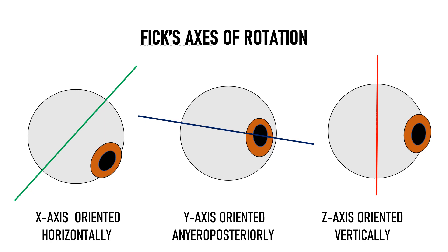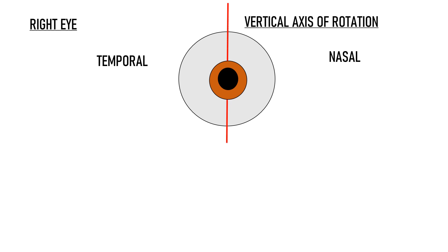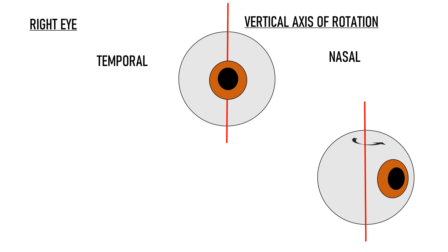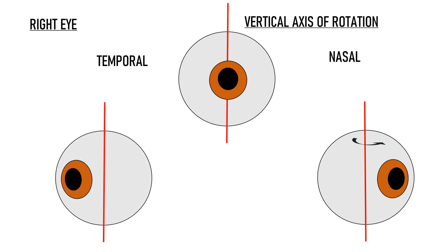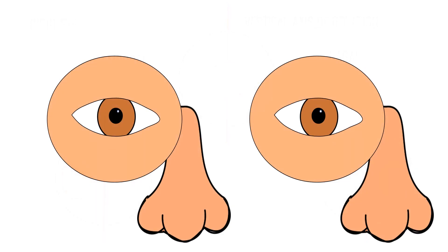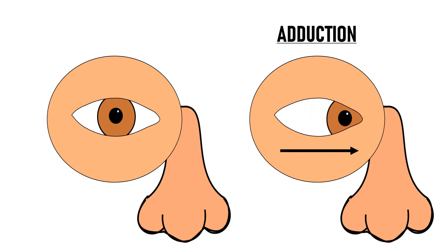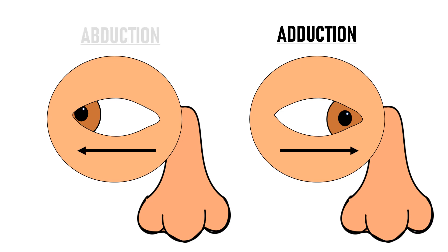Let's see how the eye rotates around these three axes. This is the right eye of the patient and this is the vertical axis of rotation. If the eye rotates along this axis, it can move in only two directions — medially towards the nose, or temporally away from the nose towards the ear. This horizontal rotational movement nasally is known as adduction, and the opposite movement temporally is known as abduction.